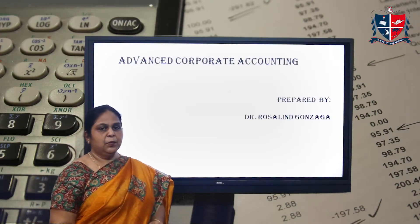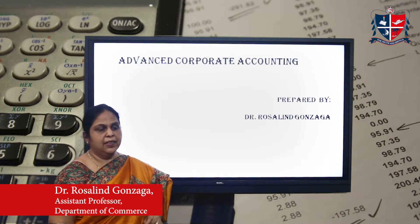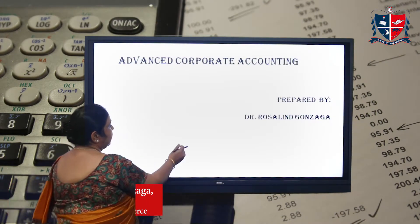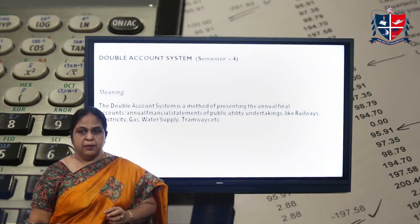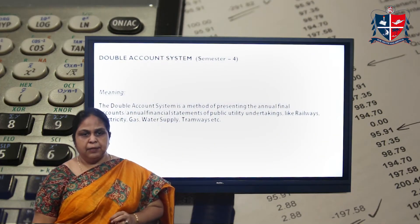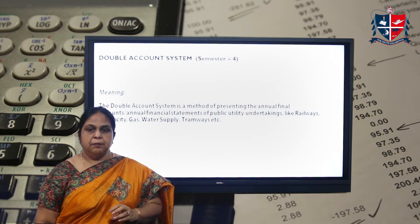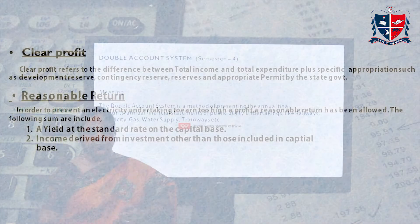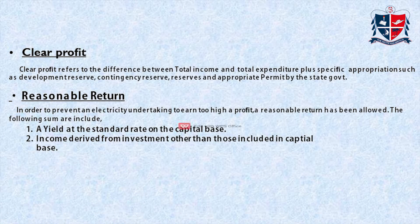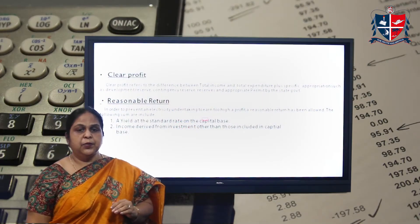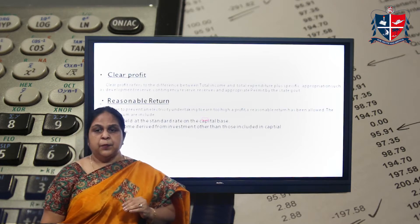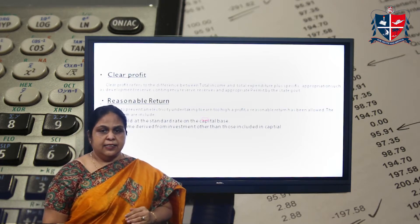Today we are going to deal with a topic from advanced corporate accounting — the double account system. The double account system is a way you present the financial statements of a public utility company. Public utility companies include railways, electricity, waterways, etc. Here I am basically taking a problem to show you how you could dispose the profits of an electricity company.